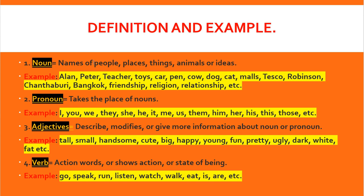Or even me — Habi, Narirat, Bia, or Leo. That is people. For places, we have malls, Tesco, Robinson, Chantaburi, Bangkok. Your home and your school are also places. For things, examples are your mask, your phone, your notebook, car, pen — those are things.